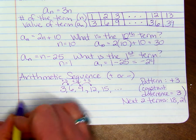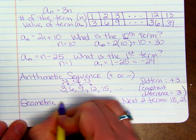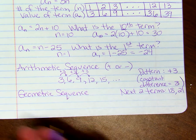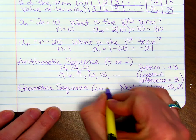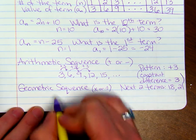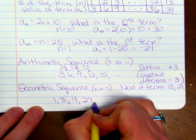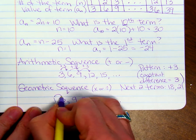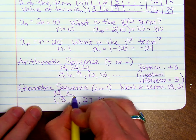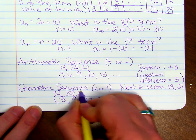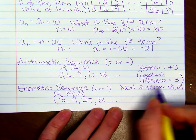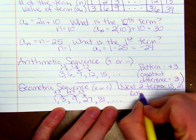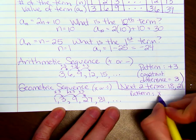Another kind of sequence is called the geometric sequence. That is where we are multiplying or dividing. Here's a geometric sequence: 1, 3, 9, 27, 81, and so on. If we go from 1 to 3, we're multiplying by 3. From 3 to 9, we're multiplying by 3. 9 to 27, times 3. So the pattern is times 3.